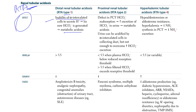When you have metabolic acidosis in RTA type 1, the urine pH is greater than 5.5, and serum potassium is decreased.